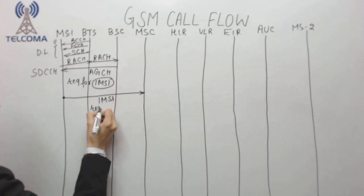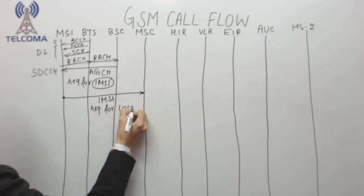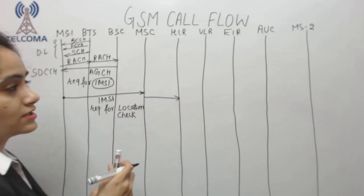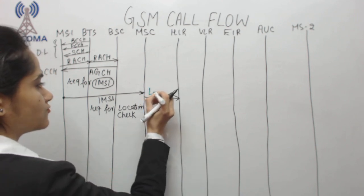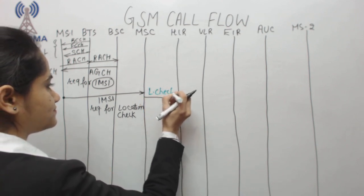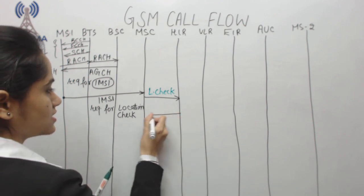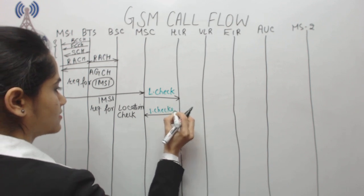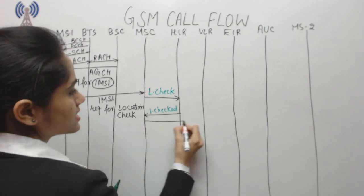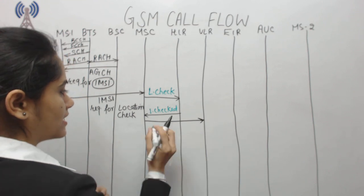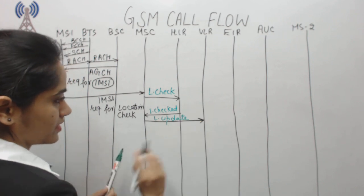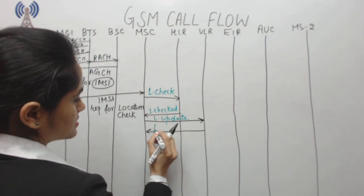MSC sends a message request for location check - please check the location of the mobile station. MSC will communicate with HLR for location check. After checking the location, HLR will send a message that location is checked. Then MSC communicates with VLR with a request for location update.